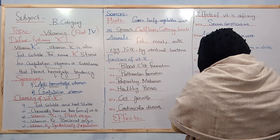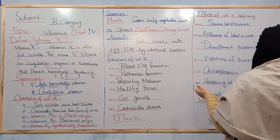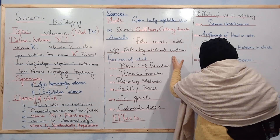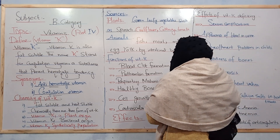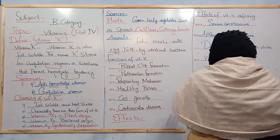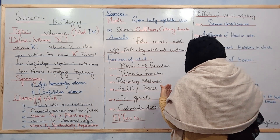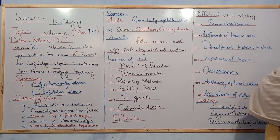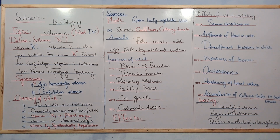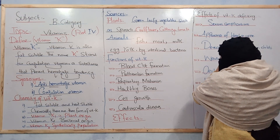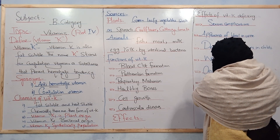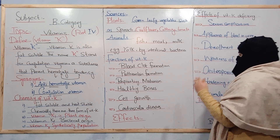There are many functions of vitamin K. It plays a vital role in blood clot formation. It is also involved in prothrombin formation — prothrombin is a plasma protein produced in the liver in the presence of vitamin K.